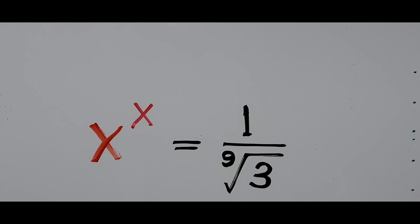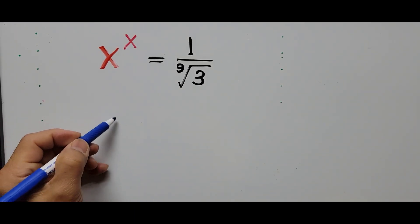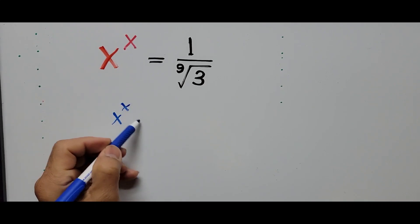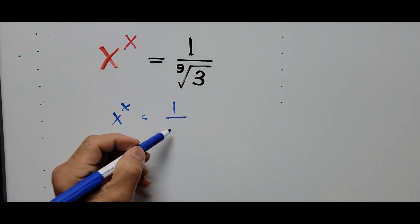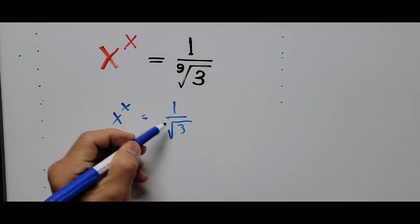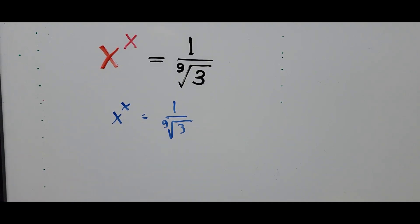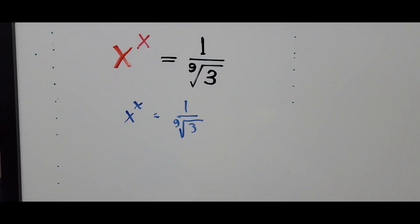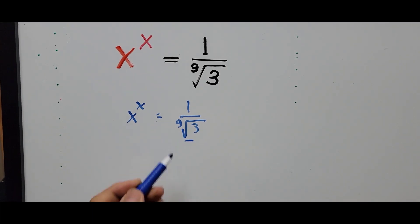We have to focus our attention on the right side of the equation — that's the constant part — and we're going to manipulate this value: the 9th root of 3. So we start with x to the power of x equals 1 over the 9th root of 3.